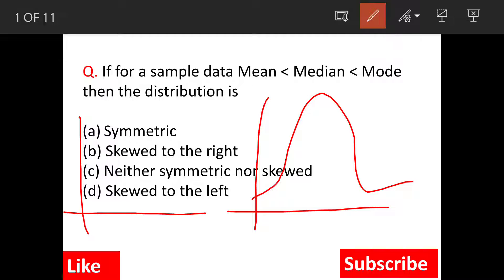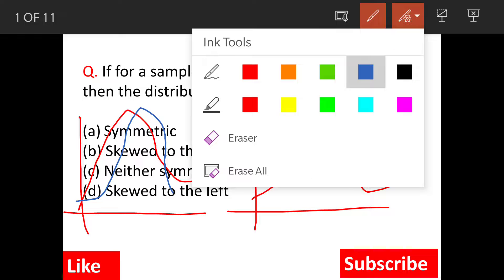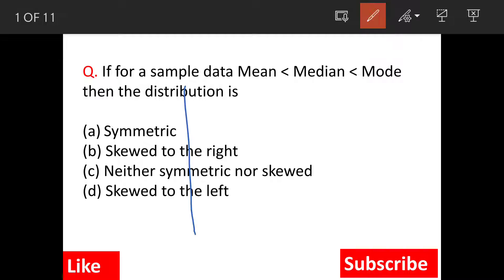right means the curve is something like this. And skewed to left, the curve is something like this, reverse of the one which is to the right. Then neither symmetric nor skewed.